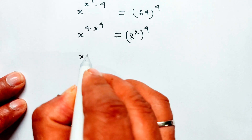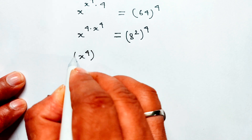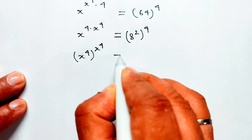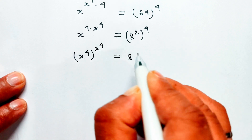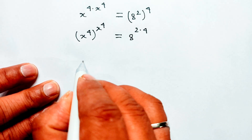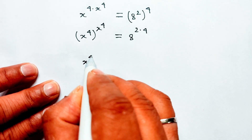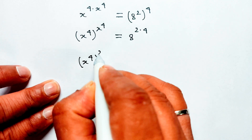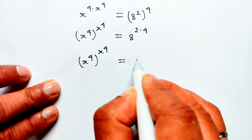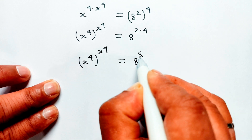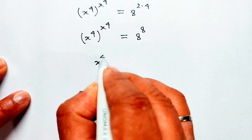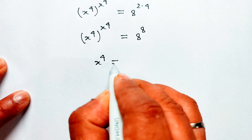Then x to the power 4 whole to the power x to the power 4 equal 8 to the power 8 times 4. Simplifying, x to the power 4 whole to the power x to the power 4 equal 8 to the power 8. Therefore, x to the power 4 equal 8.